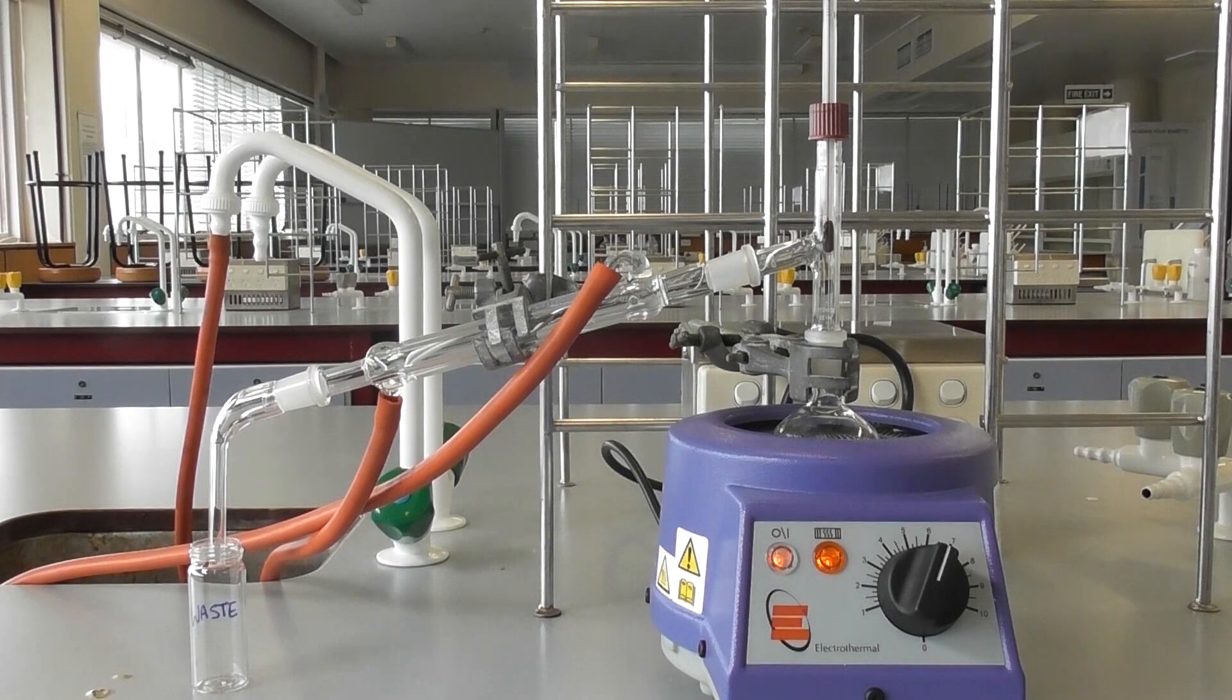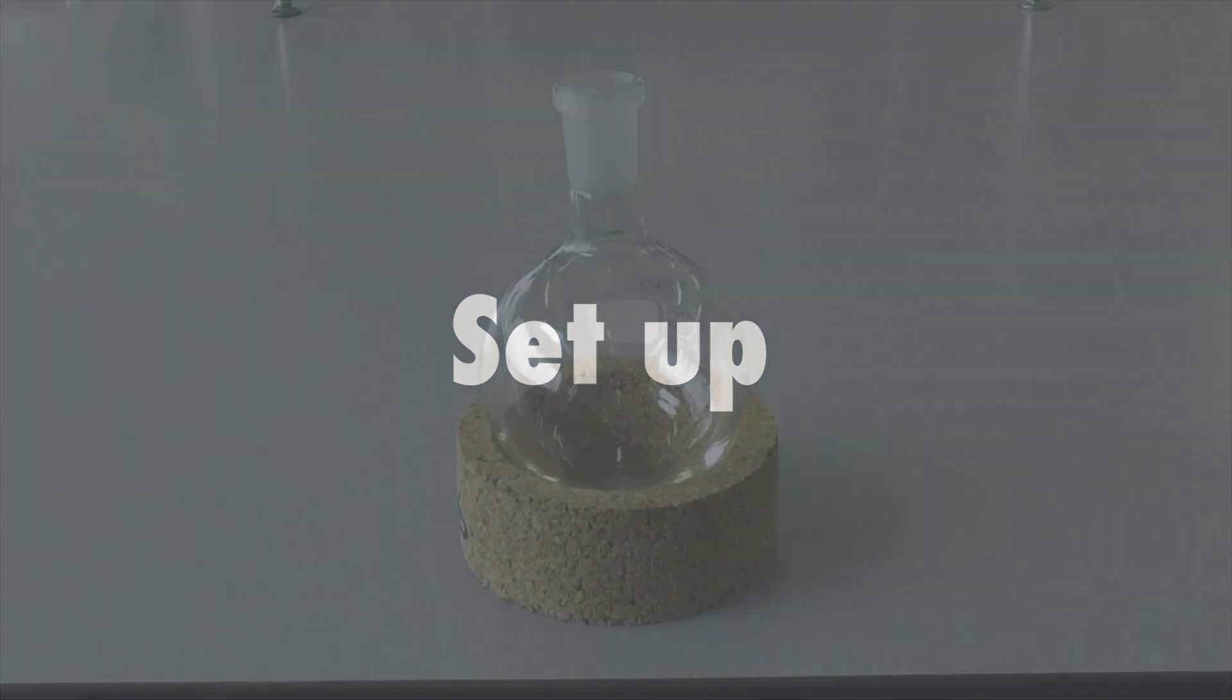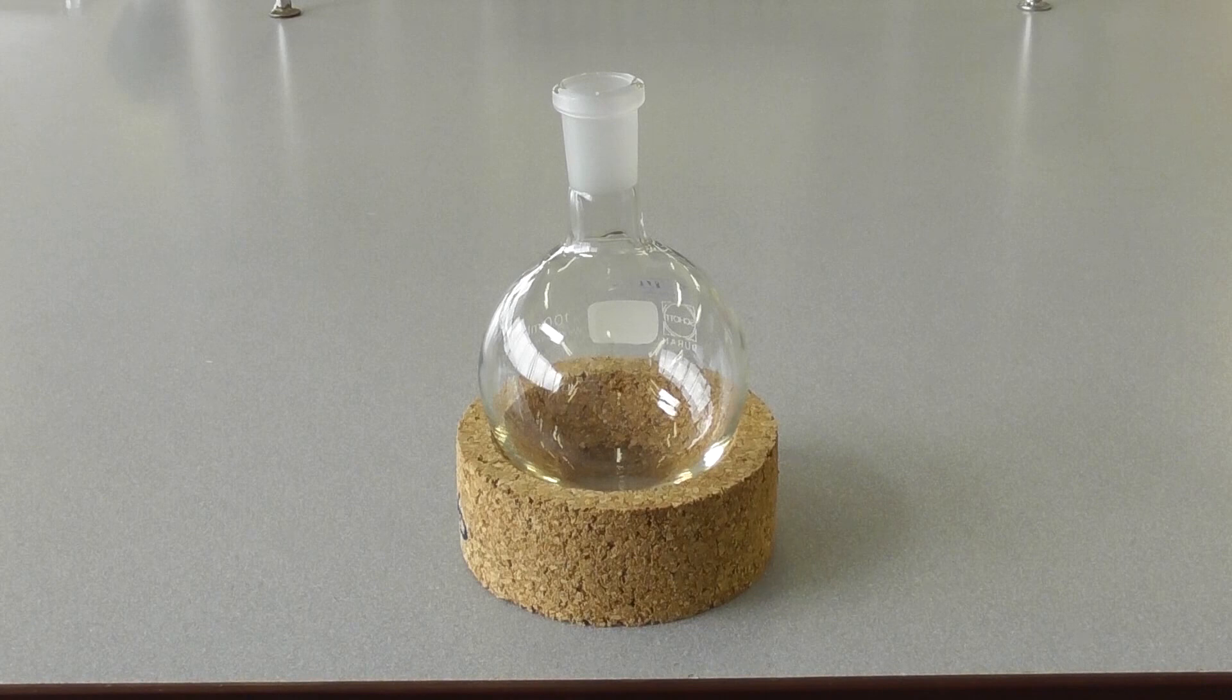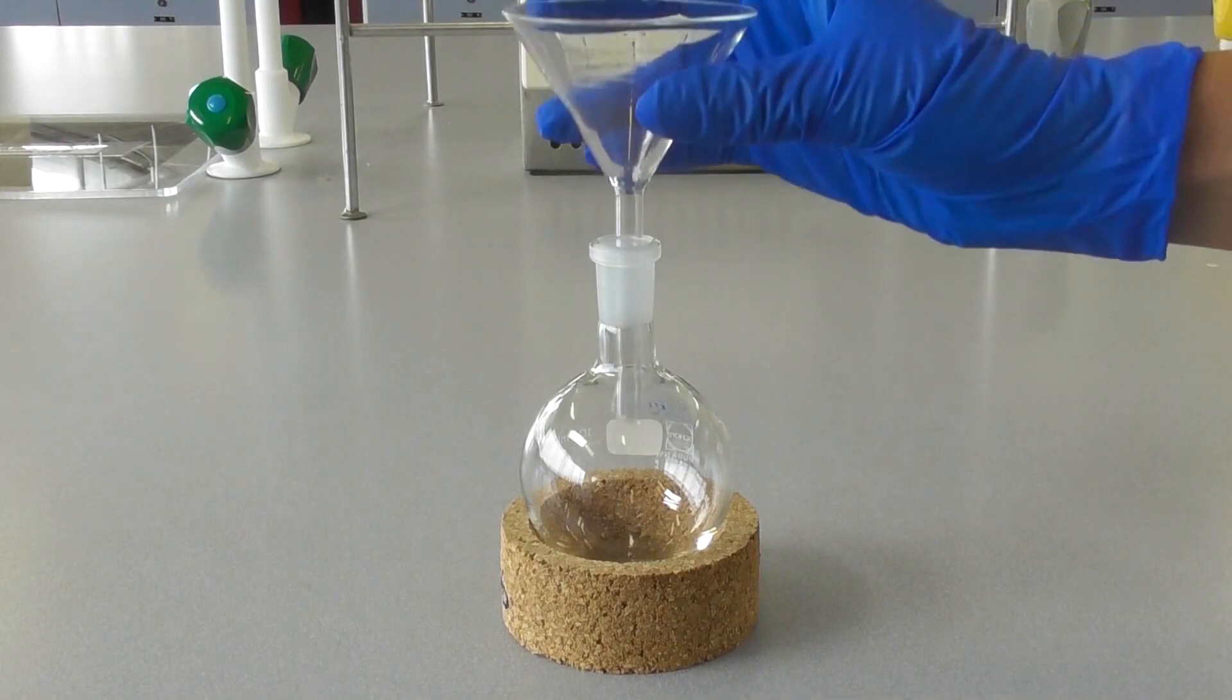Carrying out a distillation requires a lot of specialized equipment, which we'll show now. The first piece of equipment you'll need is a round bottom flask. As these will not be stable on your bench, you should stand these flasks in a cork ring or beaker.